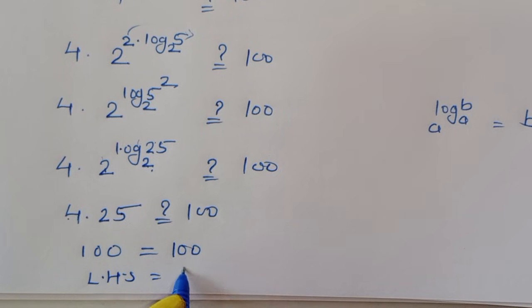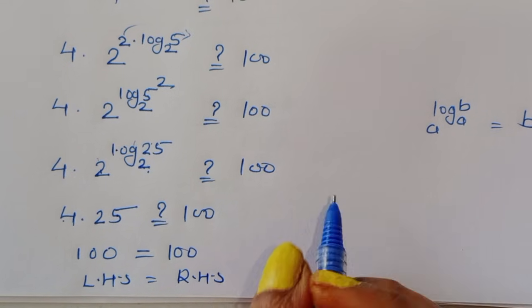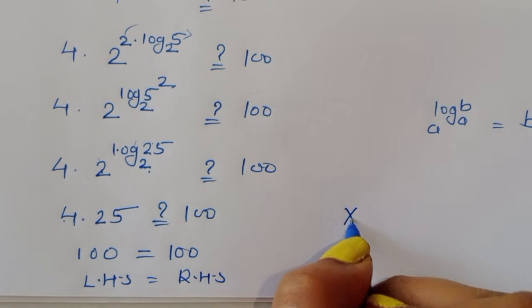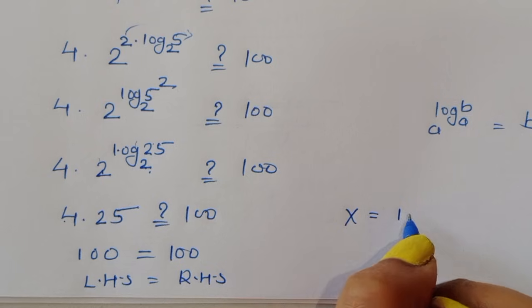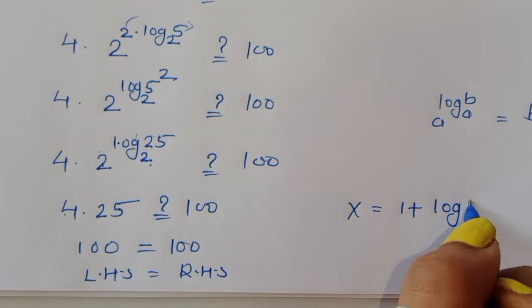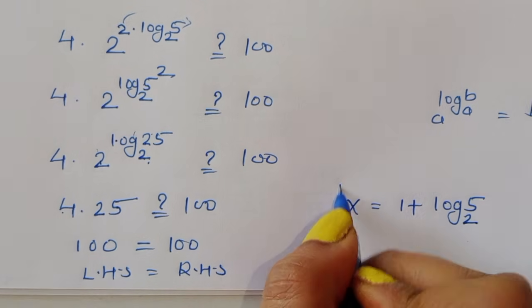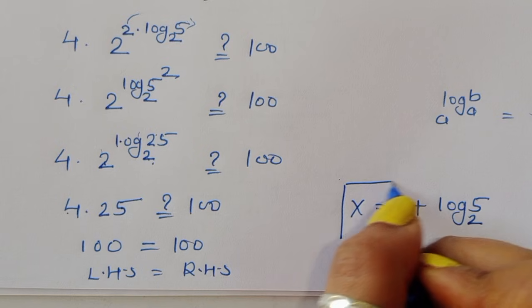So 4 times 25 equals 100, and 100 equals 100. Therefore LHS equals RHS, confirming that x equals 1 plus log of 5 to the base 2 is the correct solution.